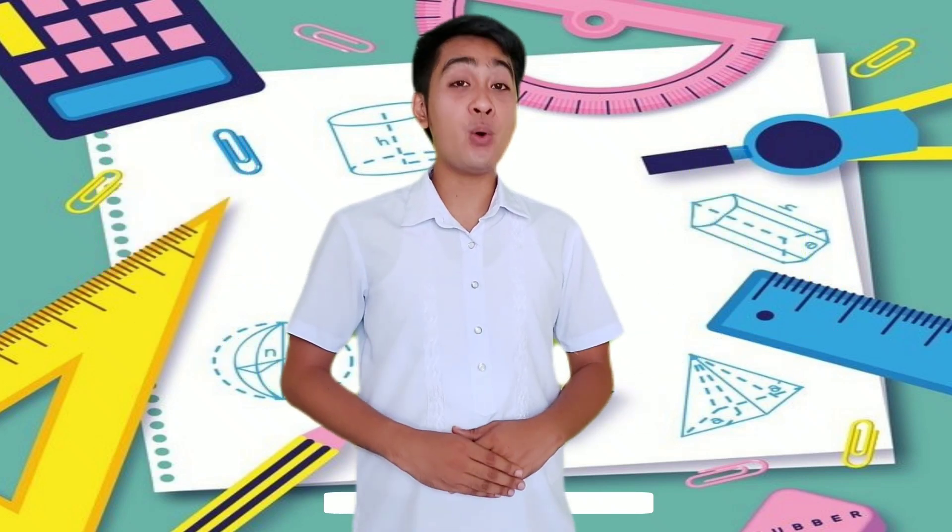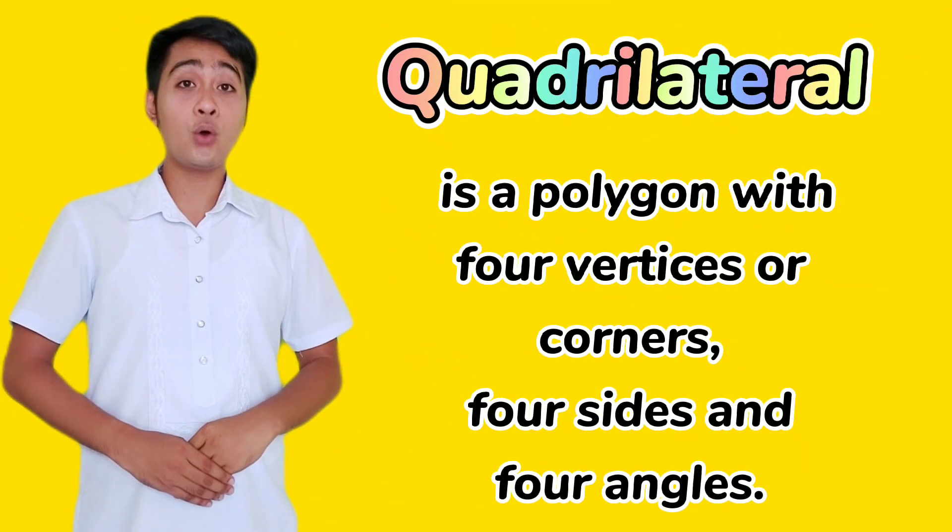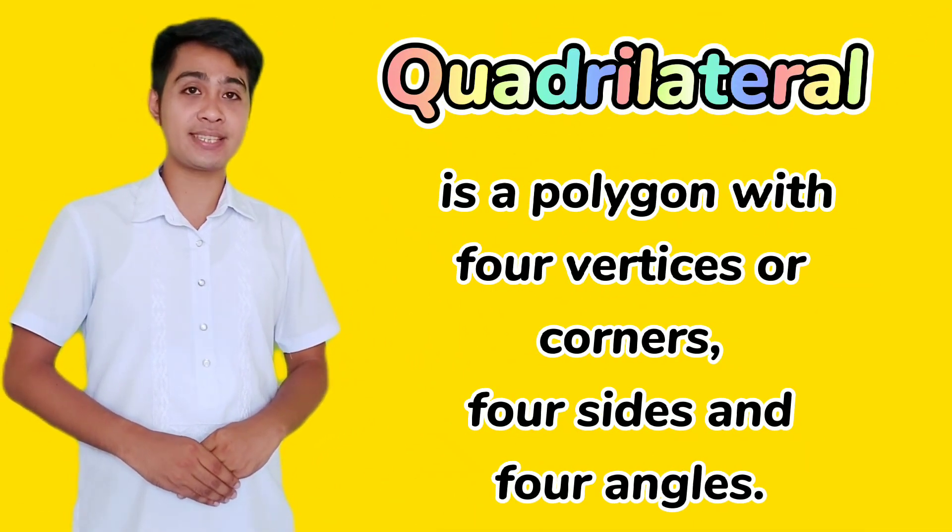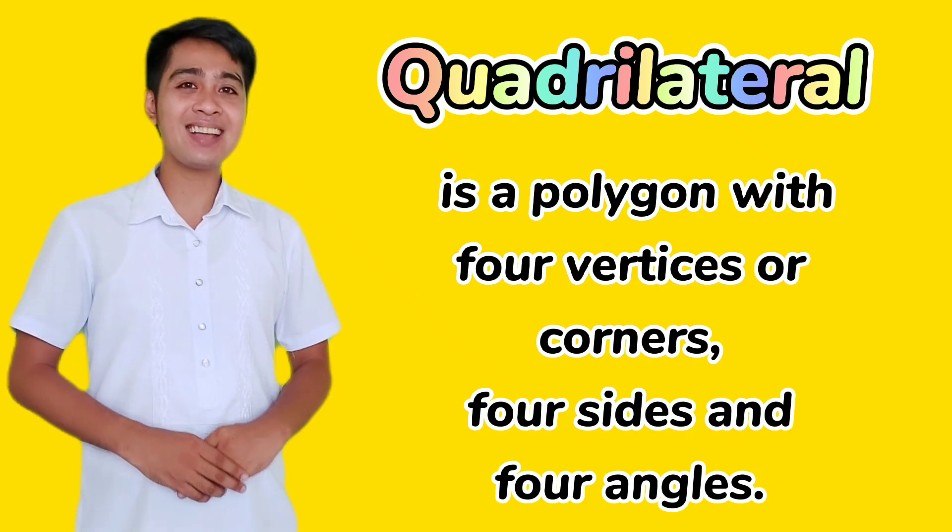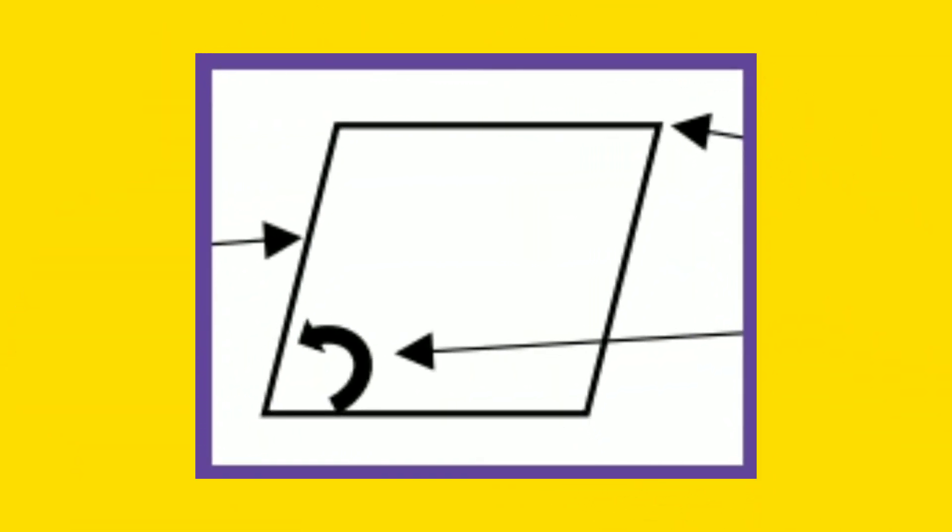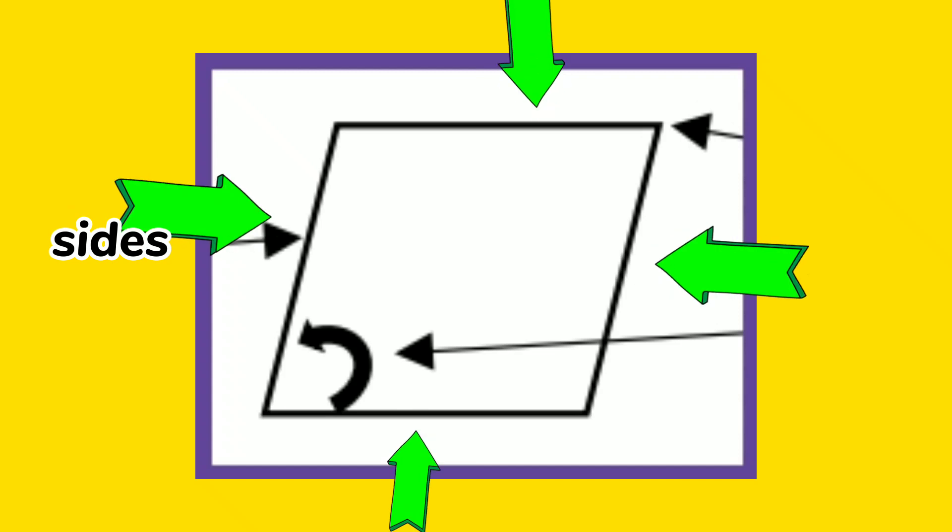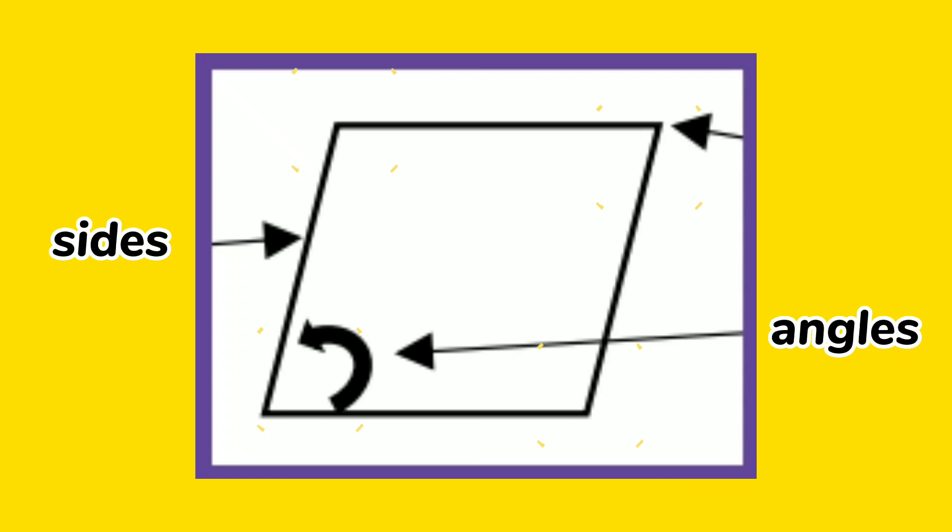Let's talk about them one at a time. Quadrilateral is a polygon with four vertices or corners, four sides, and four angles. In this figure, these are the four sides, the four angles, and the four vertices.